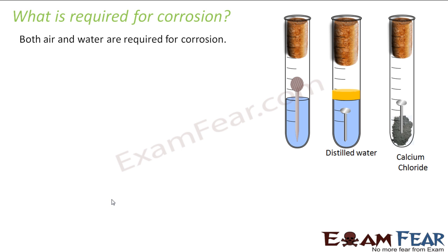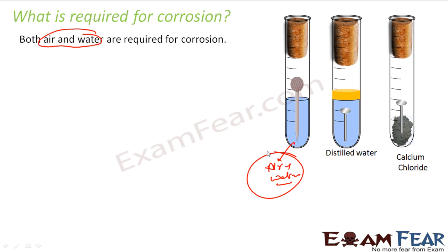So what is required for corrosion? We know that both air and water are required for corrosion. To prove this, we can take three test tubes. In the first test tube we put a nail that is exposed to both air and water — there is air, there is water. In the second test tube, the nail is put in distilled water with oil on top so that no air reaches the nail.